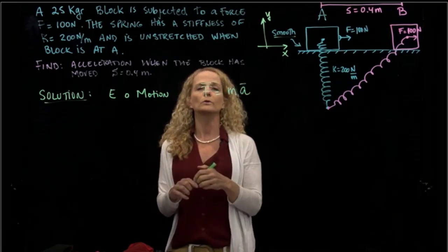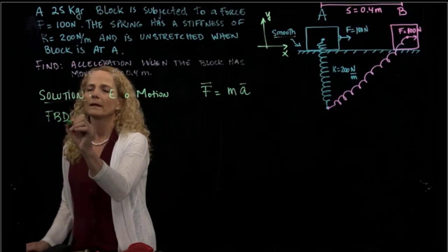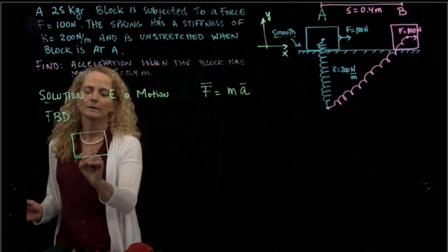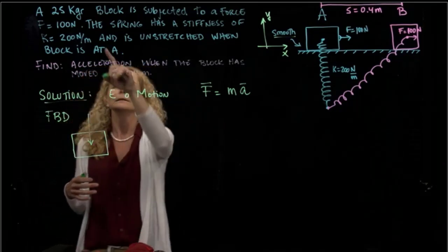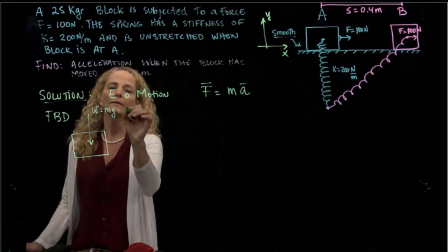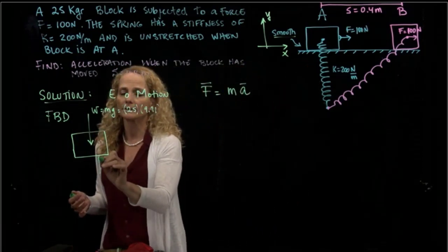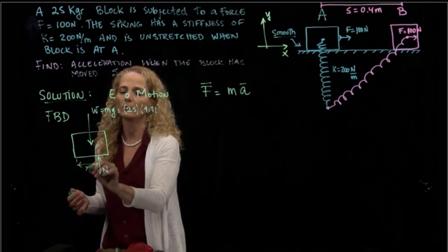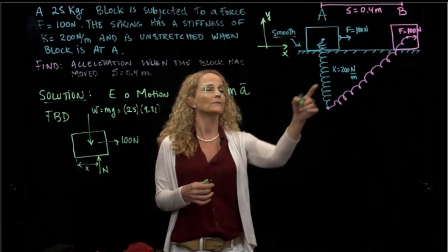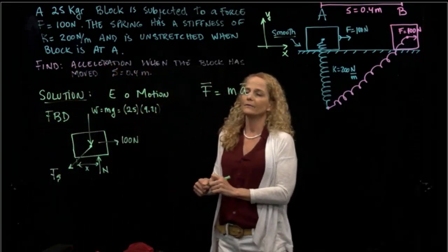To do that, we will draw our free body diagram to find our external forces and our kinetic diagram to find the acceleration. Let's draw a free body diagram of our body in position B where we want to find the acceleration. The first thing I always put is the weight, because I don't want to forget it. Since it's a 25 kilograms block, the weight equals mass times gravity, which is 25 times 9.81. Then I will put the normal — remember the normal is not necessarily at the center of the block. And then we have the applied force of 100 newtons and the force of the spring.